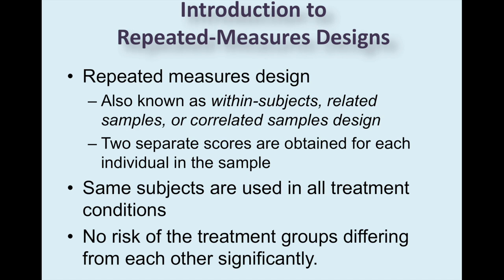Repeated measures designs, also known as within-subjects design, related samples, or correlated sample design, are the different ways you might see it in different textbooks or research articles. They're two separate scores that are obtained for each individual in the sample. Think like pre- and post-test for repeated measures design. The same subjects are used in all treatment conditions, and there's no risk of treatment groups differing from each other significantly because they're the exact same person, the exact same group of people.